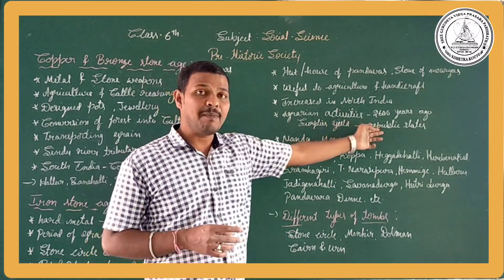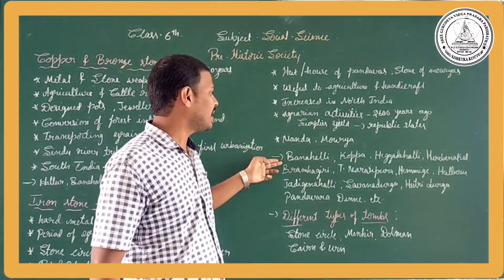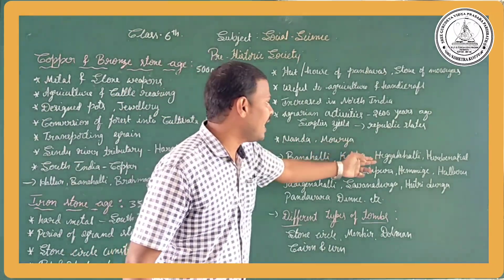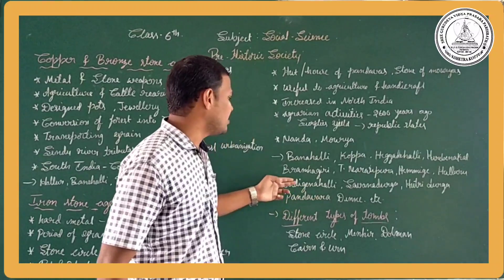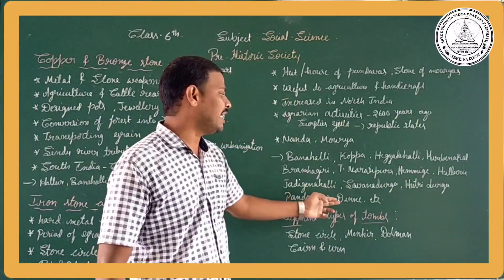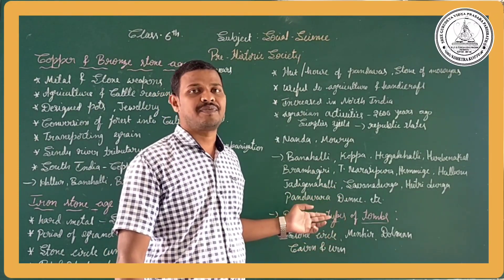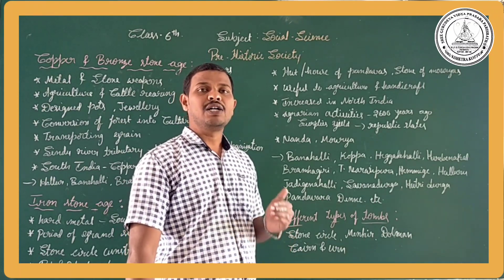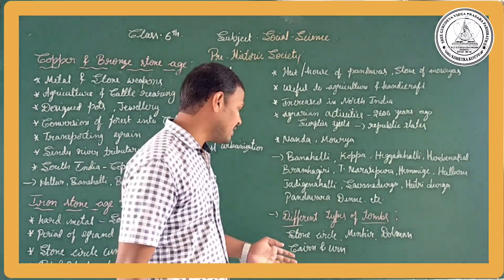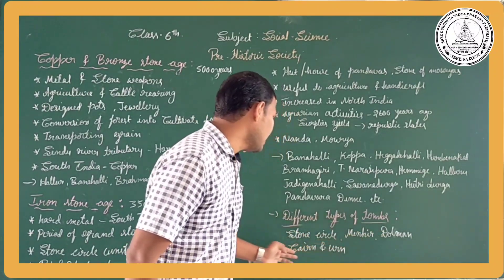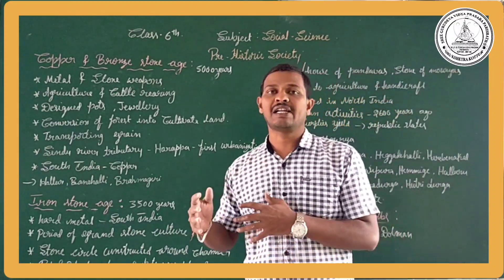The Republic states include Nanda and Maurya. The Iron Age sites found in Karnataka include Banahalli, Poppa, Hekkade Halli, Irakadakallu, Brahmagiri, Narasipura, Halluuru, Jadaganahalli, Samanathurka, Puthrithurka, and Pandavara Thinne. Different types of tombs found in the Iron Stone Age are especially named as Stone Circle, Menhir, Dolmen, and Cairn.